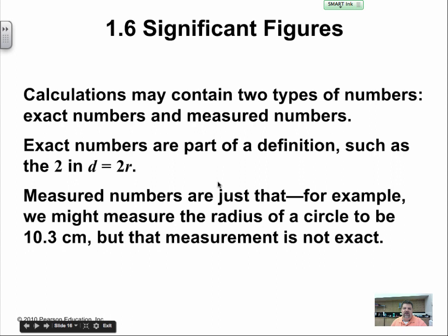Calculations may contain two types of numbers: exact numbers and measured numbers. Exact numbers are part of a definition, such as two in the equation d = 2r. Measured numbers are just that. For example, we might measure the radius of a circle to be 10.3 centimeters, but that measurement is not exact. The radius times two will always equal the diameter, and we say that two is an exact value because that's just what it is. It doesn't change.